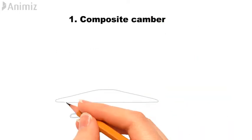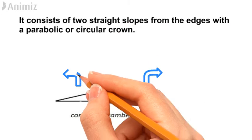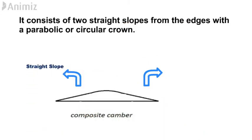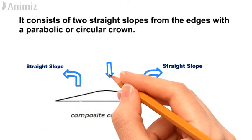One: Composite camber. It consists of two straight slopes from the edges with a parabolic or circular crown.